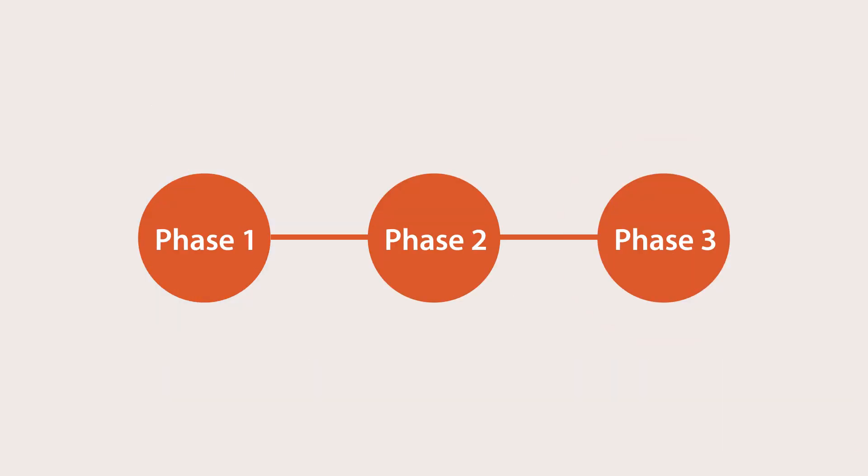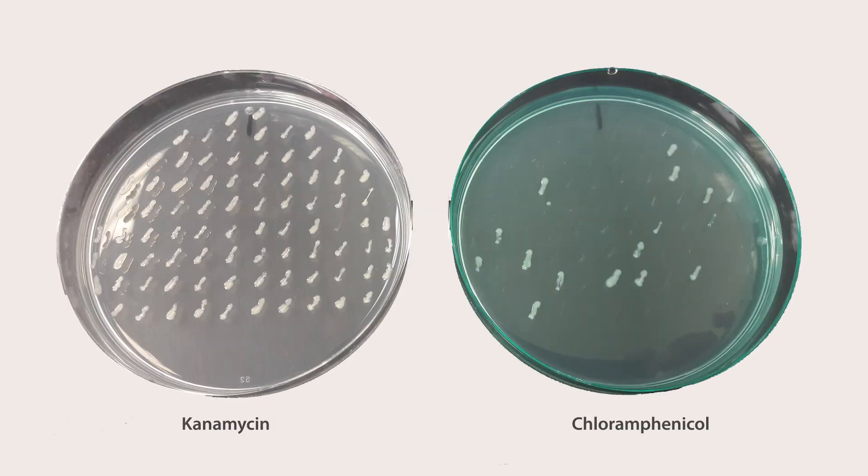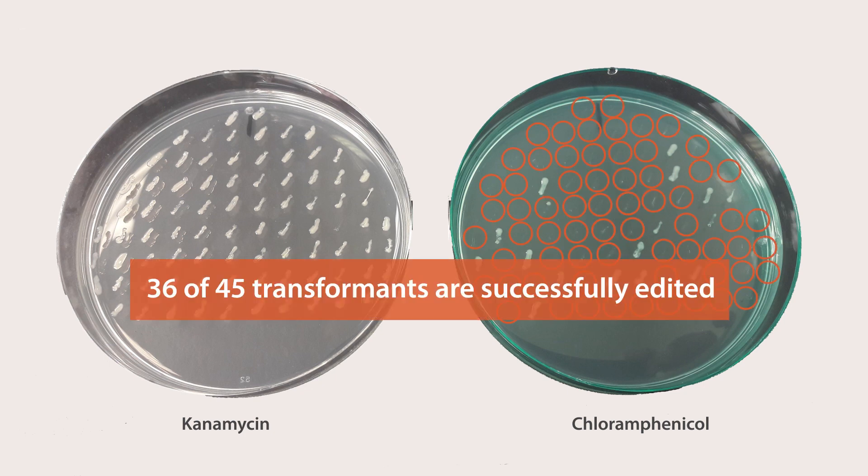In Phase 3, cells are screened for CAT gene knockouts. Transformants are replica-picked onto kanamycin and chloramphenicol agar plates. Cells that are able to grow on kanamycin plates, but not on chloramphenicol plates, indicate E. coli cells that had the CAT gene successfully knocked out. In this case, 36 out of 45 transformants are successfully edited.